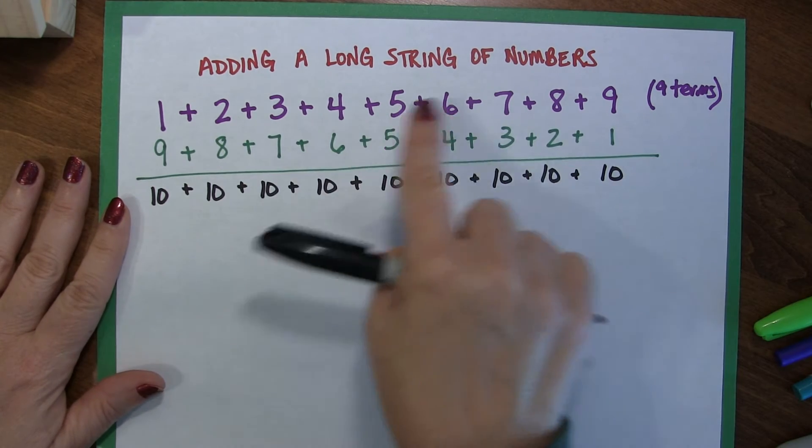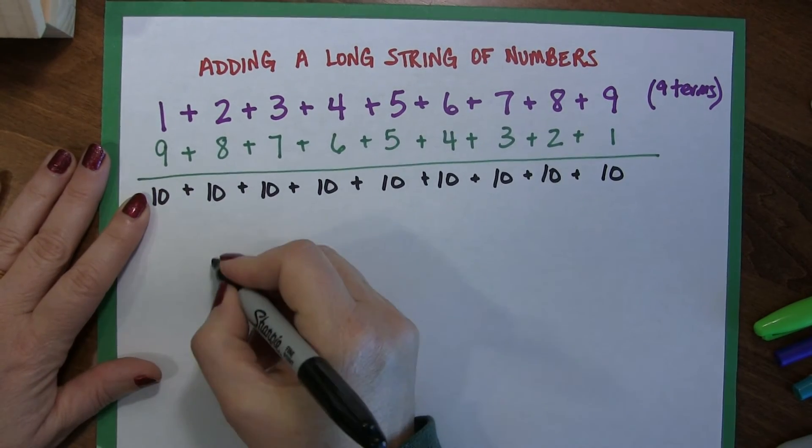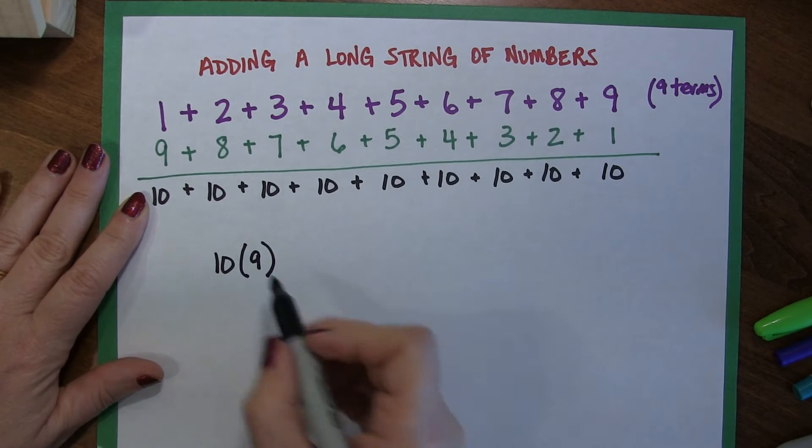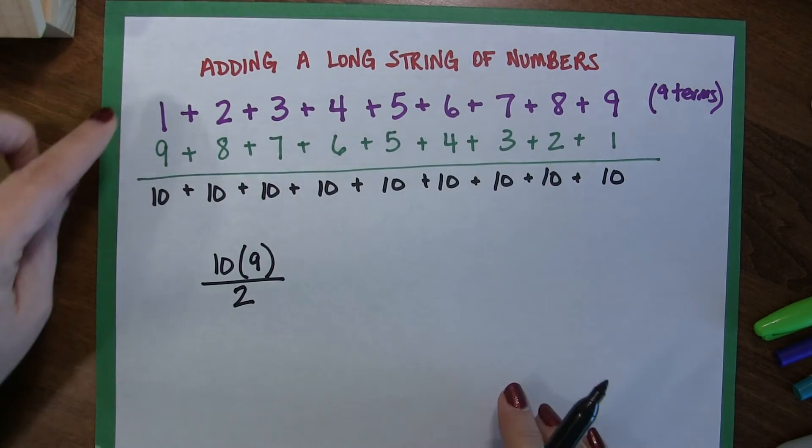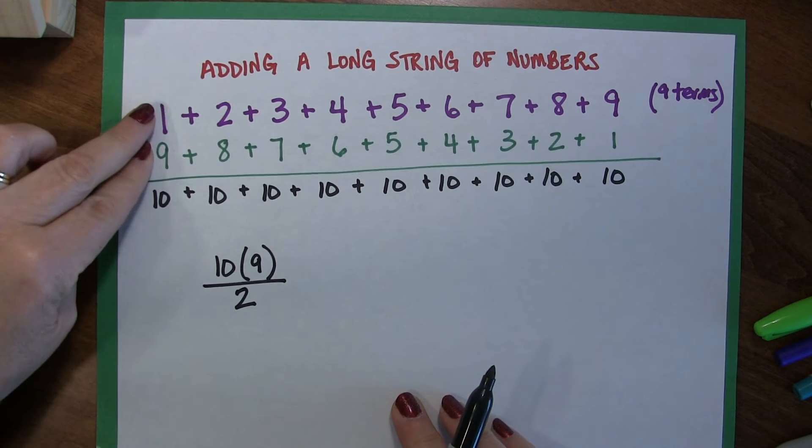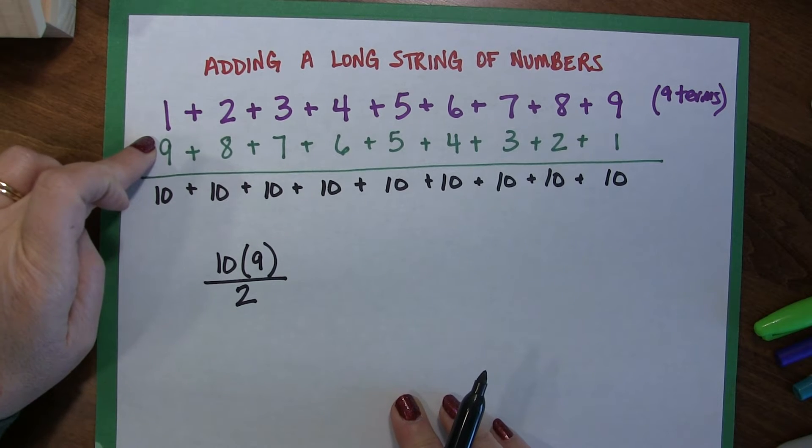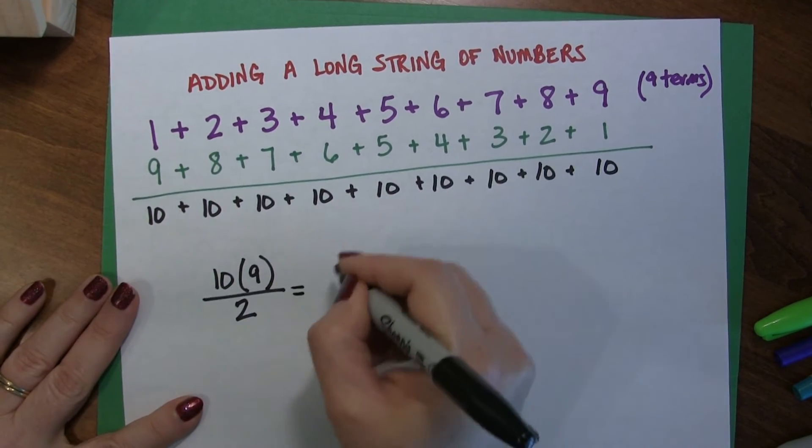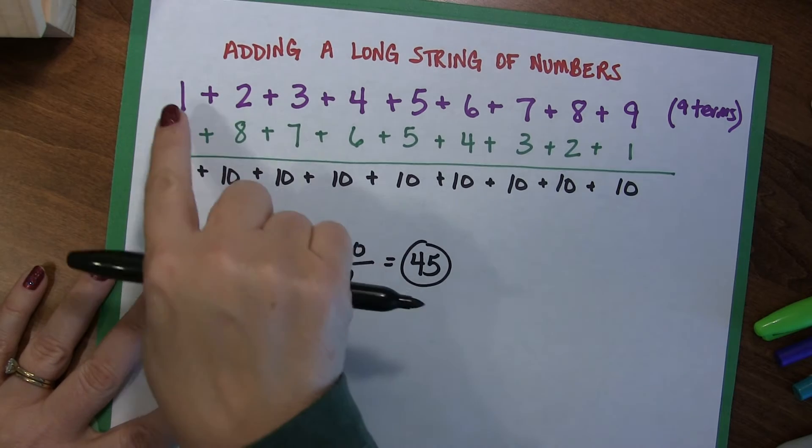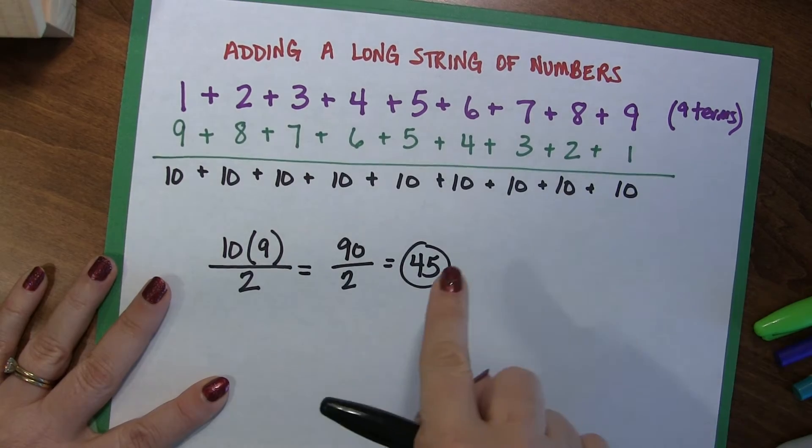So, in order to add up this purple line here of 1 through 9, here's what I could do. I could say I'm going to take 10 times 9, because I have 9 terms, and then I'm going to divide it by 2. So 10 times 9, so that's all of that together. And then I divide it by 2 because I wound up doubling my equation up here, right? I took the purple equation and I added the green equation to it. And so now I want to reduce it back down, so I get 90 divided by 2, which is 45. So the sum of all the purple numbers, 1 plus 2 plus 3 plus 4 plus 5 plus 6 plus 7 plus 8 plus 9 is 45.